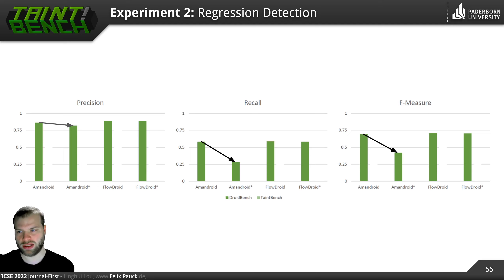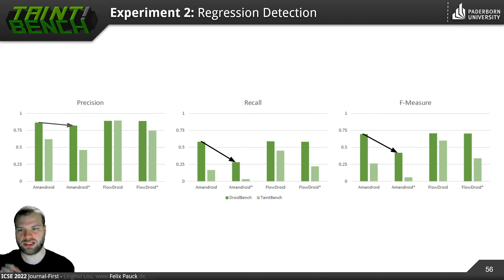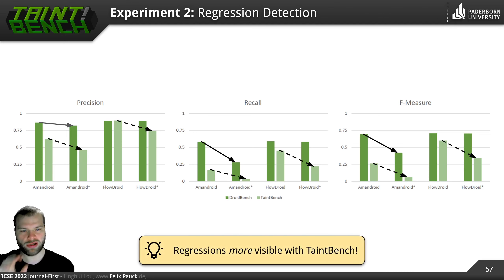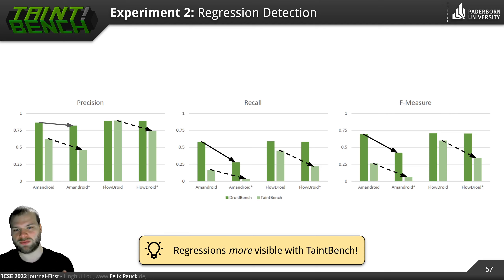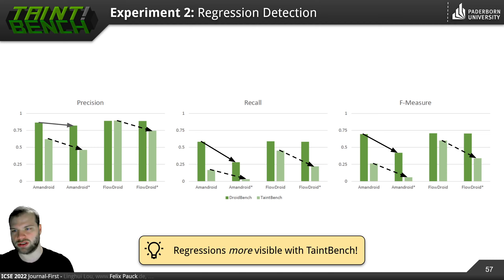Now let's look at the results with TaintBench. Here we can actually see way more regressions. For both Amandroid and FlowDroid, we see that the new version of each tool is less precise than the old version. The regressions become more visible with TaintBench. This is why we suggest integrating TaintBench into your continuous integration pipeline if you are a developer of a taint analysis tool.